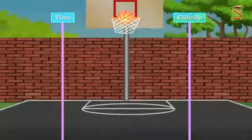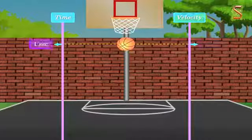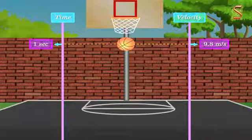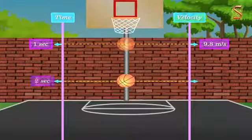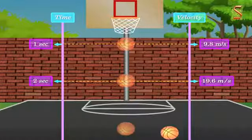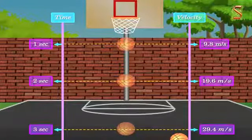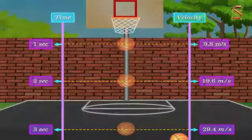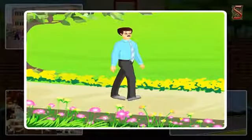In non-uniform motion, unequal distances are covered in equal intervals of time. Bodies executing non-uniform motion have varying speed or velocity — both speed and direction of motion may change. Most of the motions we come across in daily life are non-uniform. The graph for non-uniform motion is a curved shaped graph.